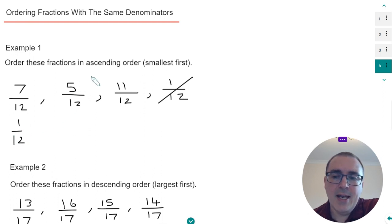Our next smallest fraction will be 5 twelfths because 5 is the next smallest number. Our next smallest fraction will be 7 twelfths, so 7 is smaller than the 11. And our biggest fraction would be 11 twelfths.